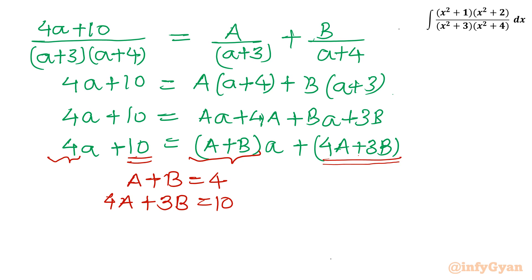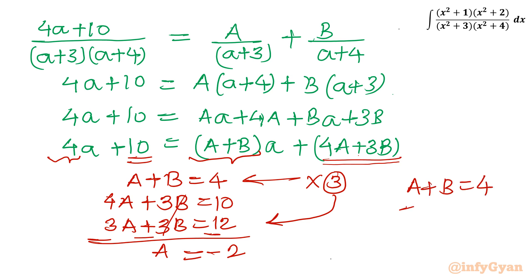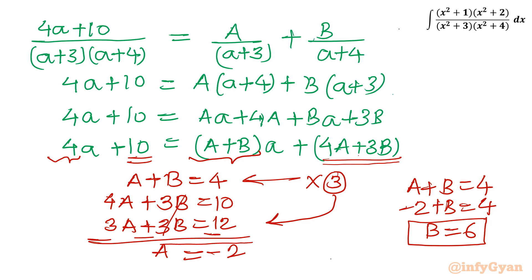To solve the system, I multiply the first equation A + B = 4 by 3, giving 3A + 3B = 12. Subtracting from 4A + 3B = 10 yields A = −2. Substituting A = −2 back into A + B = 4 gives −2 + B = 4, so B = 6.